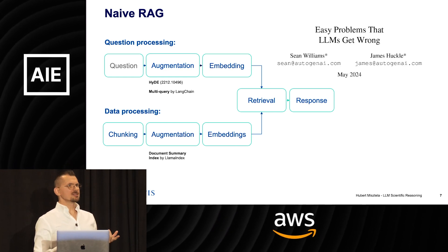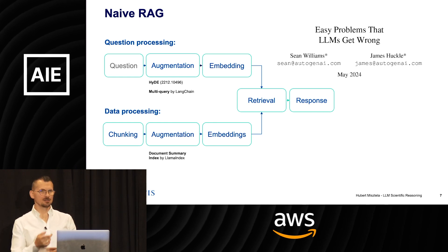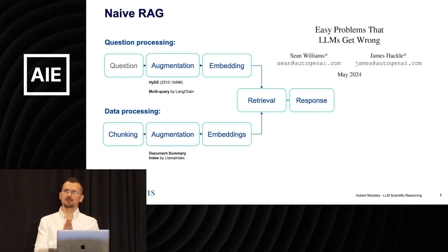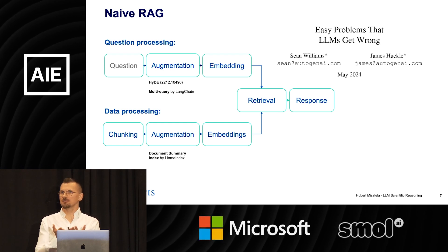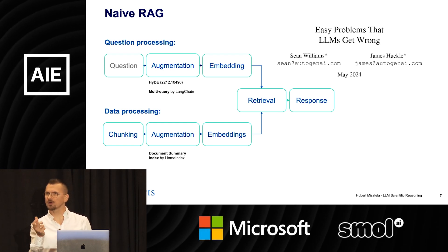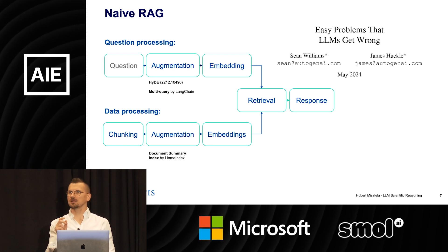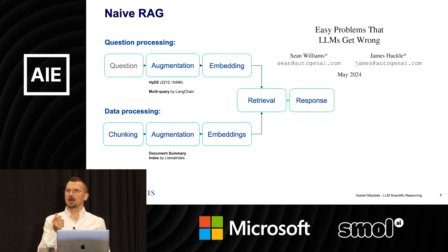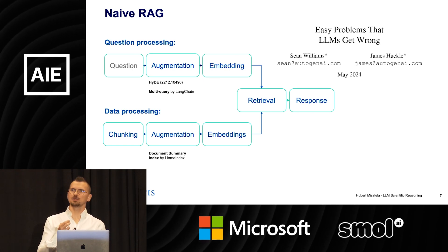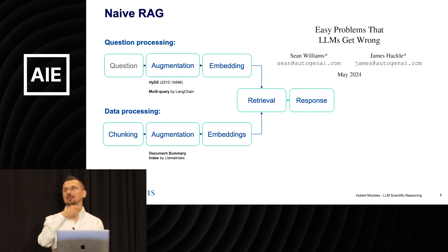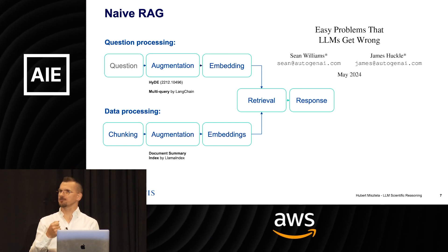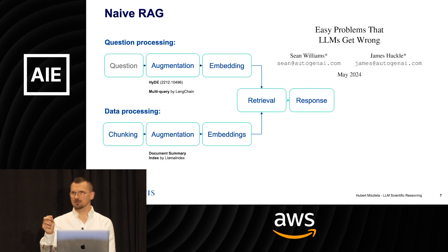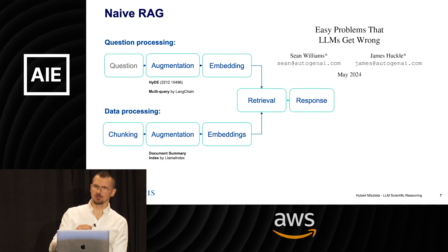But the problem is — and this is a really interesting paper — if LLMs cannot respond to more complex, convoluted questions, how can we expect LLMs to understand the question and then on top of that give us the right response with RAG? So we are trying to run before we crawl.